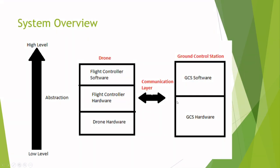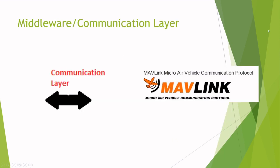Now let's go to the communication layer — the glue between the drone and the ground control station. Some people refer to this as middleware or the communication layer, but it is simply a standard protocol that the ground control station and the autopilot software use to communicate with each other. For example, there is a standard command in the Mavlink protocol — command number 21 — and this command is a land command that tells the drone it needs to land.